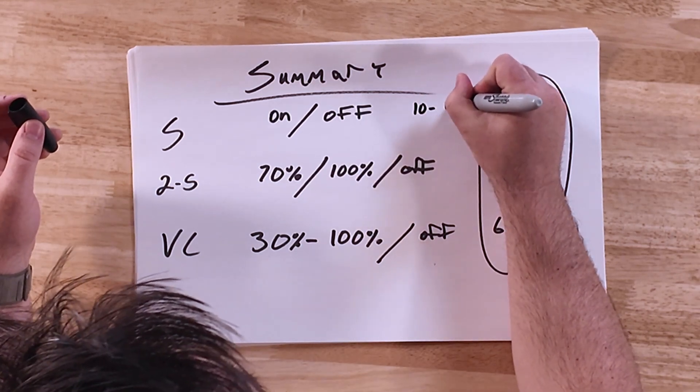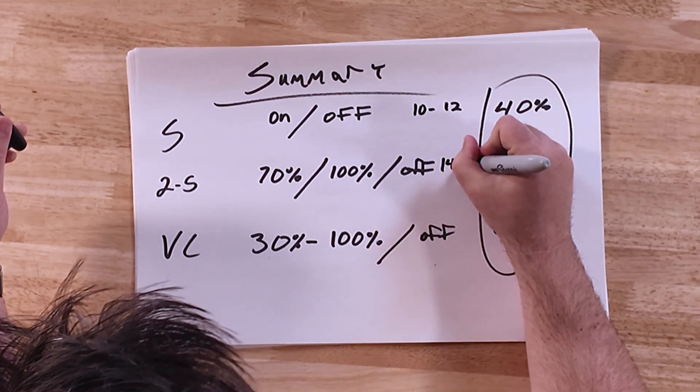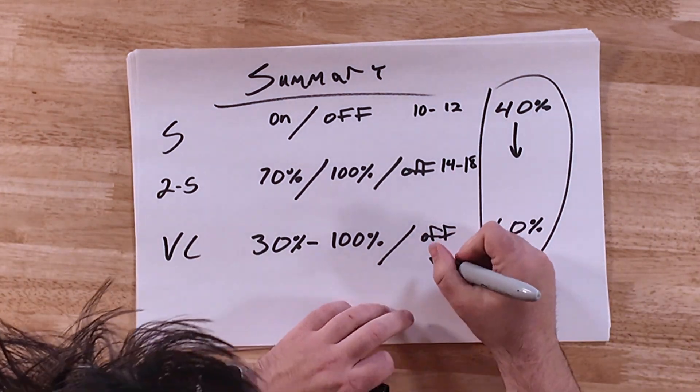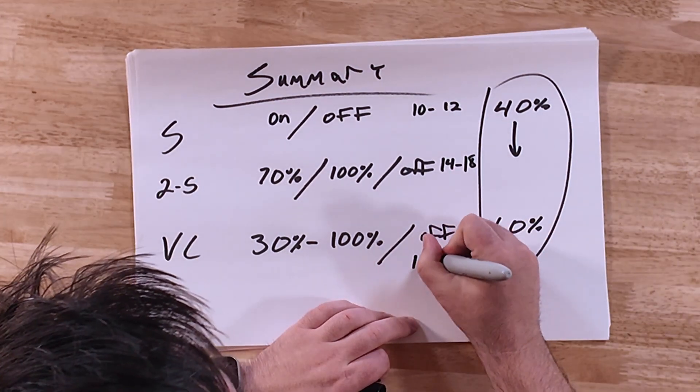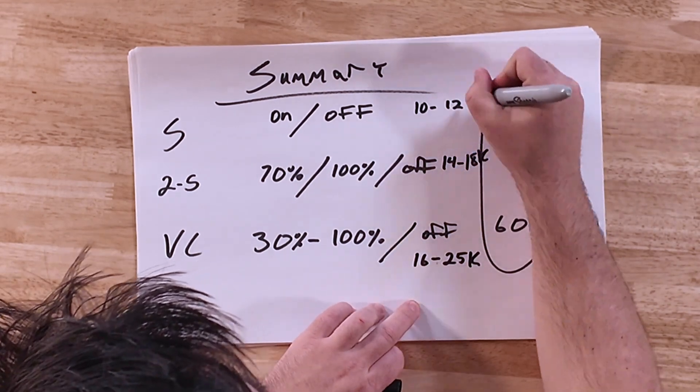As far as price point: single-stage systems are typically around $10,000 to $12,000; two-stage systems run about $14,000 to $18,000; and variable capacity equipment ranges from about $16,000 to $25,000 depending on the system options. If you're in a circumstance where you need a new air conditioning system, our prices are available online and in our blogs. You can also call us and we'd be more than happy to provide an estimate — we'd love to help you out.